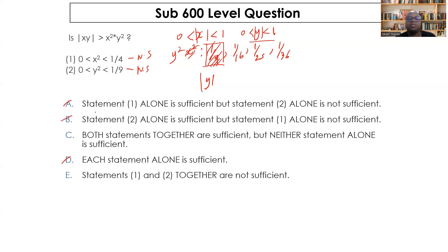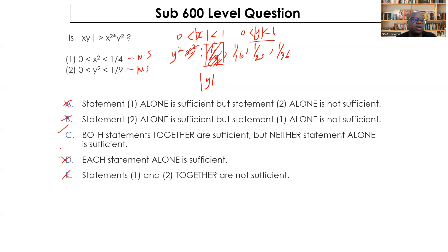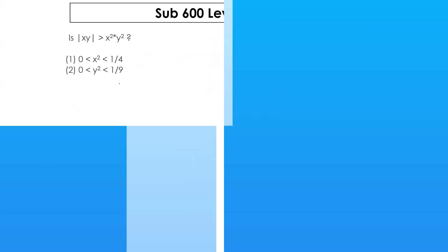We rule out answer choice B. Combining both statements: the absolute values of both x and y fall between zero and one, so multiplying them gives |xy| less than x²y² — the condition is satisfied. Therefore, combining both statements is sufficient, and the answer is C.